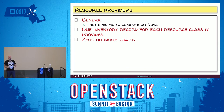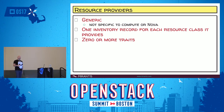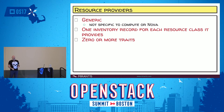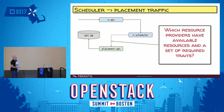Resource providers — the thing to remember is they are generic. They're not specific to compute or Nova. They're really just anything that provides some resource. The resource provider is going to have one or more inventory records — each resource class that the provider provides will have a separate inventory record — and it'll be associated with zero or more traits.